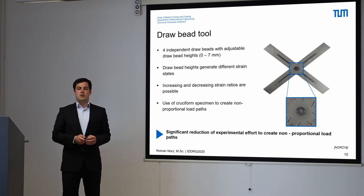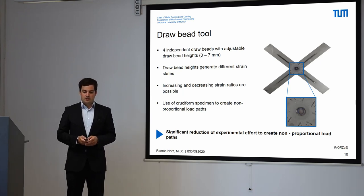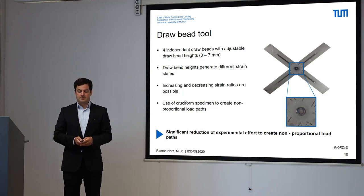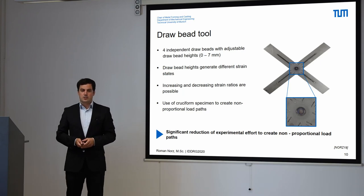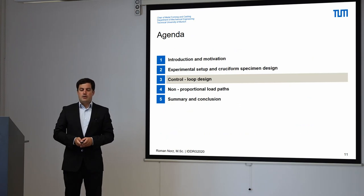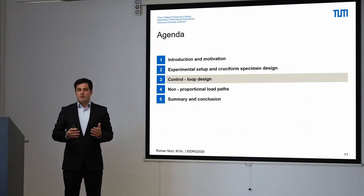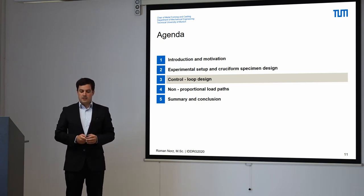This is the case because we only need one tool, one machine, and one optical measurement system to create non-proportional load paths. Another benefit is that we are using a lot less material for this specimen. But currently, we can only create the strain path by setting the draw bead height and the Nakajima punch, so no other effects are taken into account.